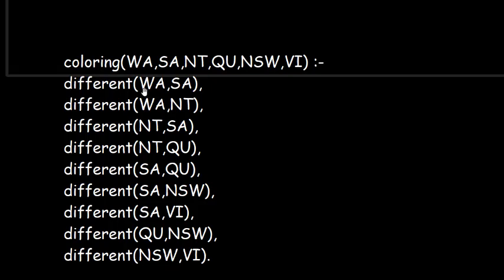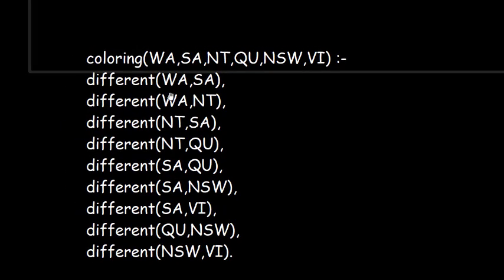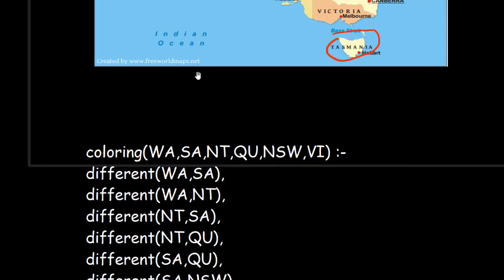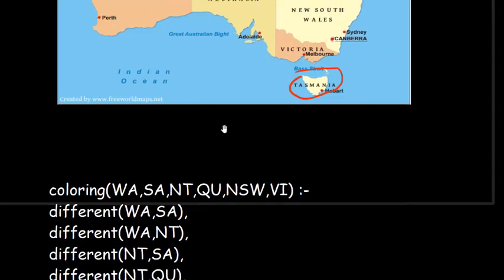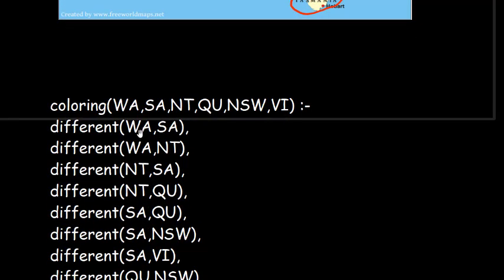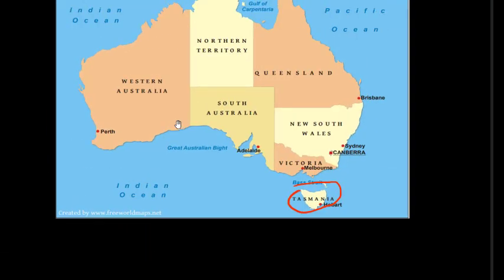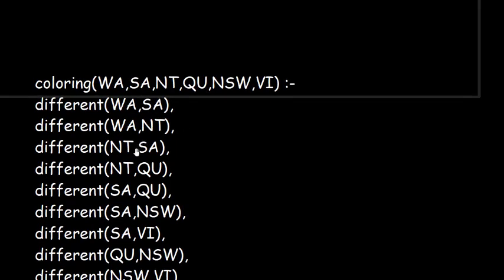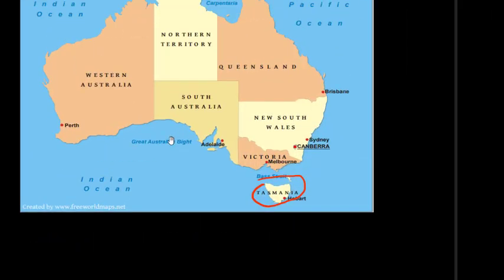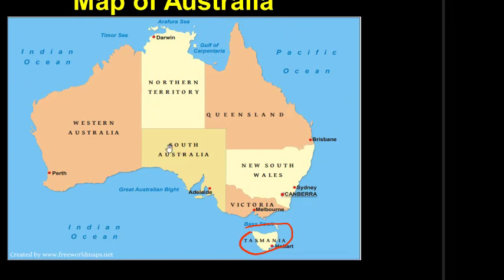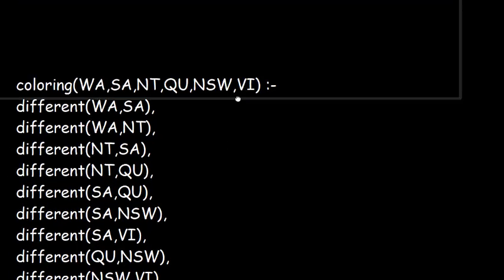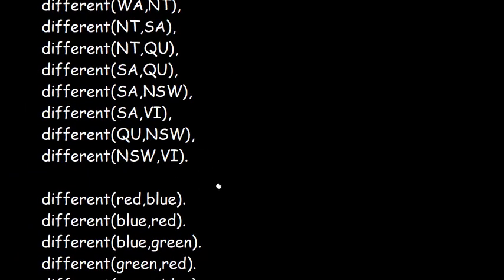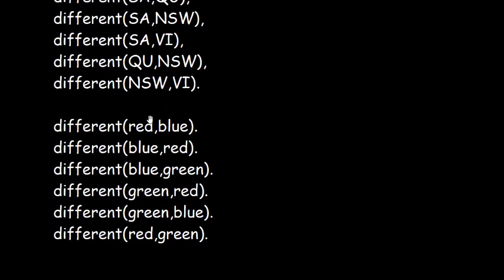All states sharing boundaries must have different colors. Western Australia shares a boundary with Northern Territory and South Australia, so we define: different(WA, SA) and different(WA, NT). For Northern Territory, we add different(NT, SA) and different(NT, QU). South Australia shares boundaries with almost all other states, so the remaining three are also defined accordingly.